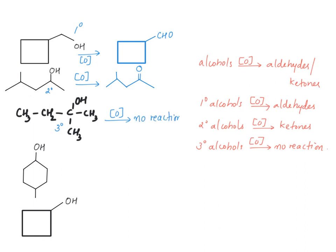Here this is a secondary alcohol, and when this is undergoing oxidation what you will get is the corresponding ketone. This is the line and angle structure of it, and here you will have a double bond to oxygen corresponding to the formation of a ketone.